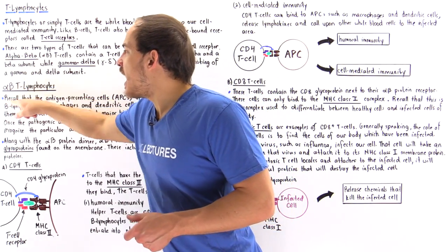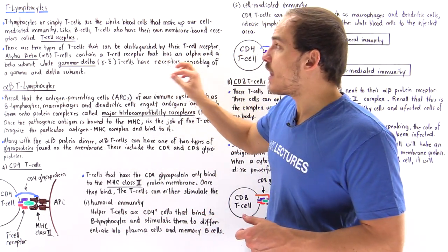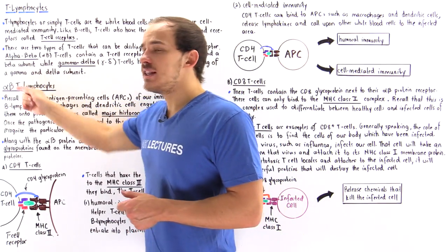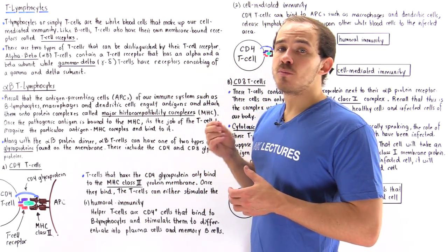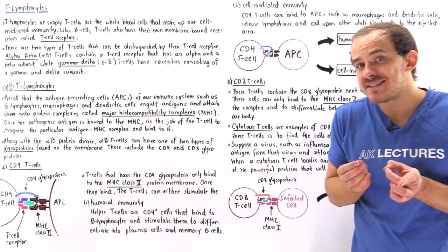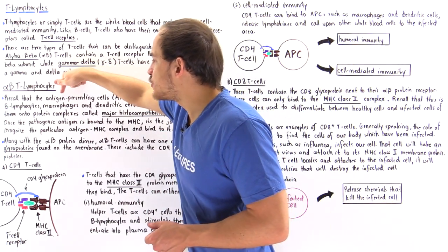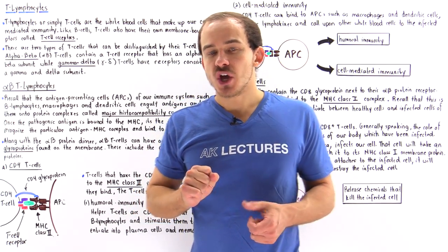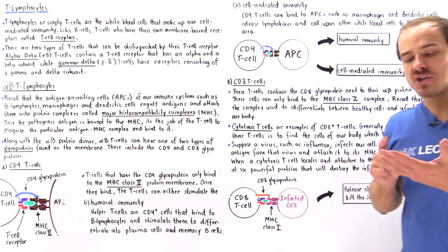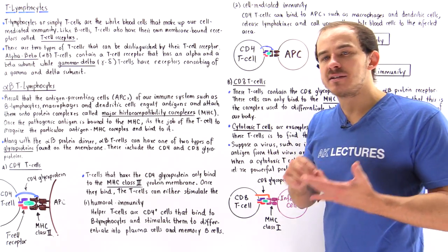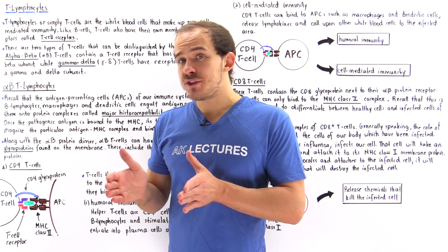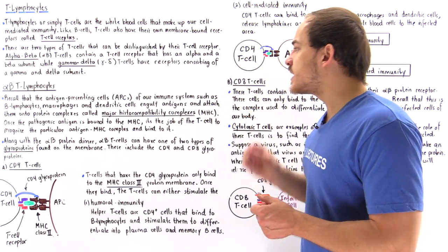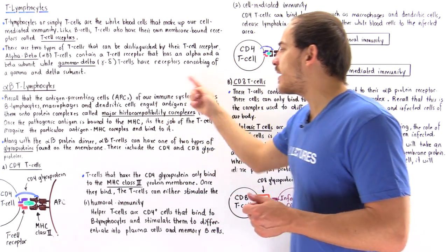On top of having that T cell receptor consisting of an alpha and a beta subunit, these T lymphocytes also contain glycoproteins that are necessary to actually bind to the antigen presenting cells. We have two different types of glycoproteins: CD4 glycoproteins and CD8 glycoproteins, and the difference between these two is their ability to bind to different types of major histocompatibility complexes.